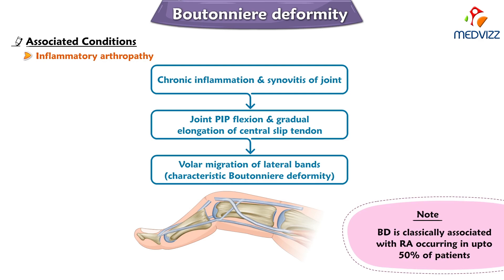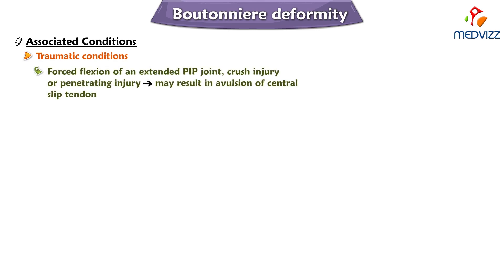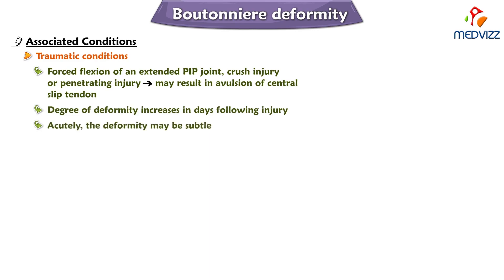Not only inflammatory arthropathy — traumatic conditions can also cause boutonnière deformity. For example, forced flexion of an extended proximal interphalangeal joint, crush injury, or penetrating injury may result in avulsion of the central slip tendon. Typically, the degree of deformity increases in the days following the injury; acutely, the deformity may be subtle.